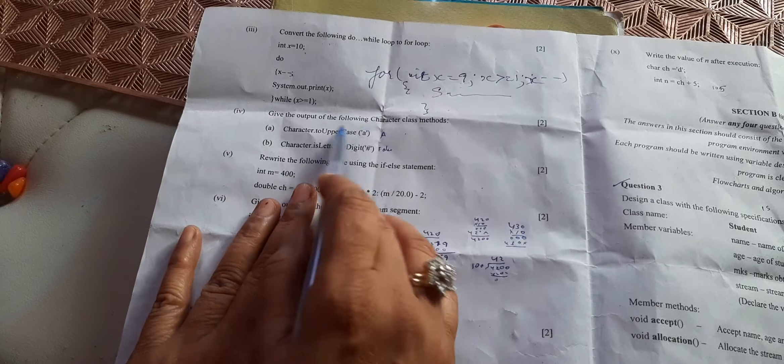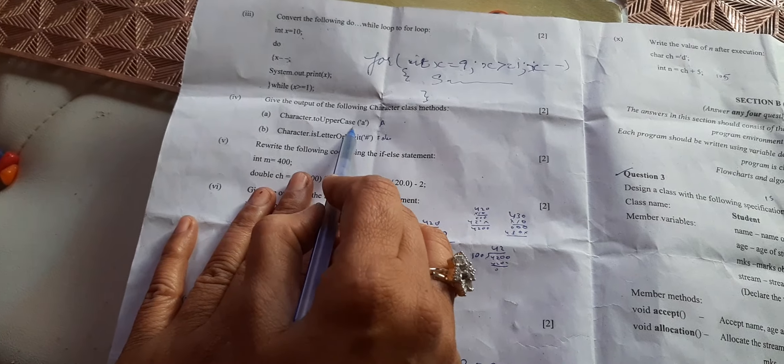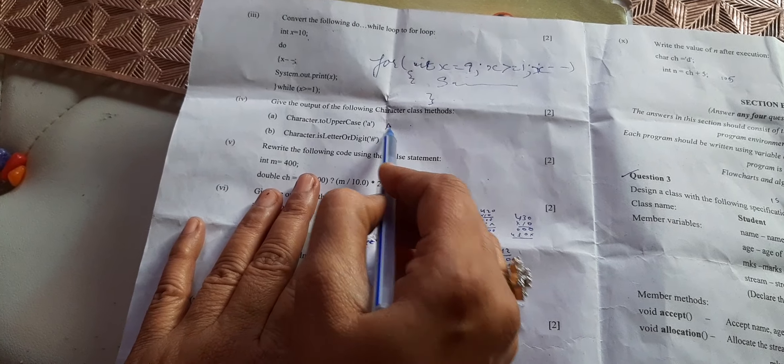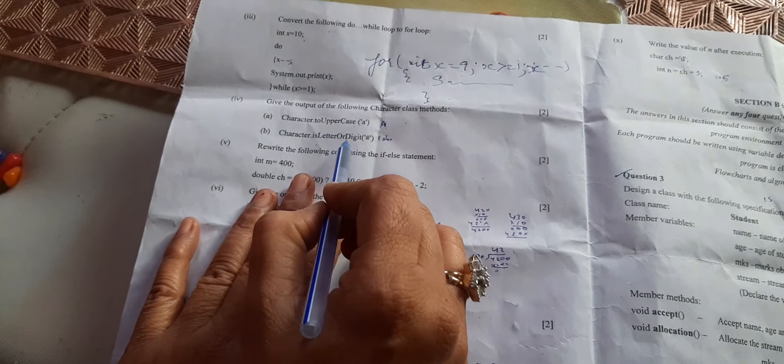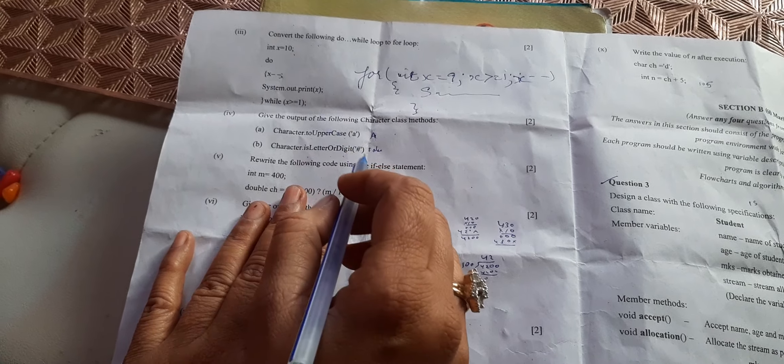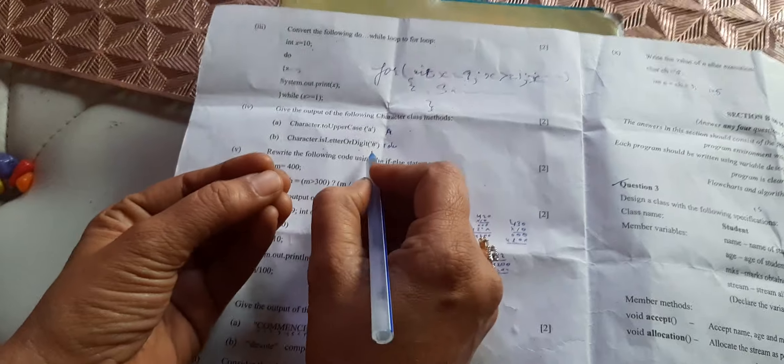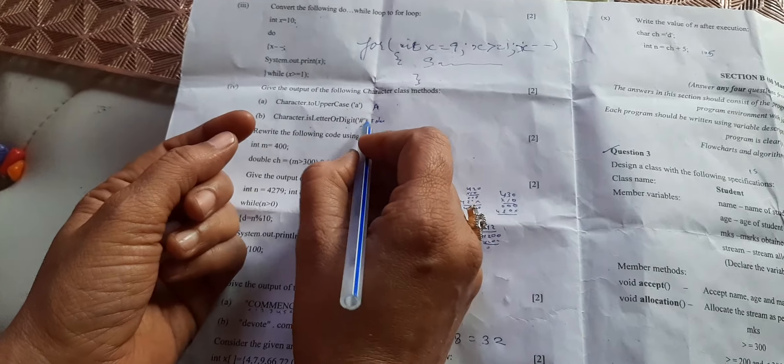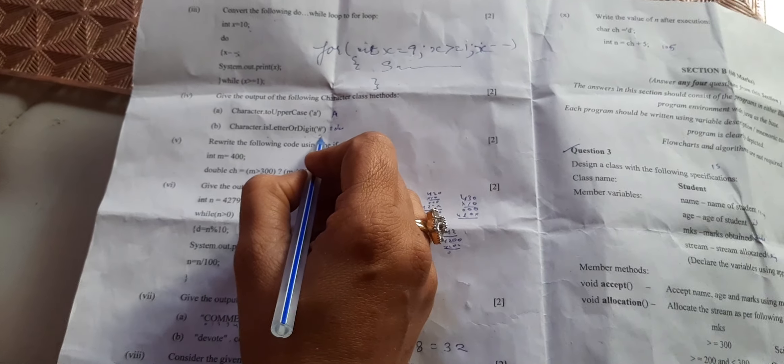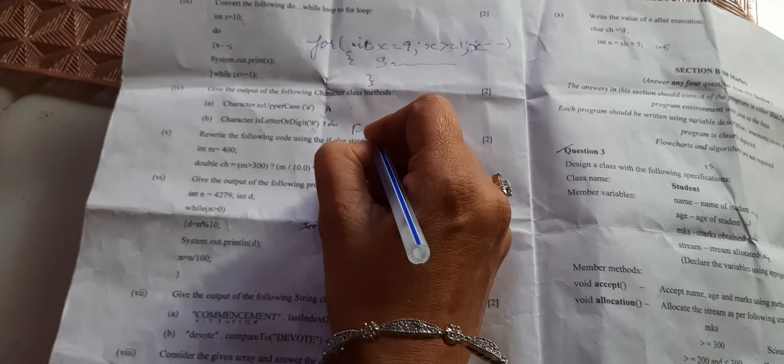Give the output of the following. toUpperCase - a will be converted into capital letter. isLetterOrDigit is a very good function. It will find whether the particular character is letter or digit. But here this is hash, it is not a letter, it is not a digit, so the answer will be false.